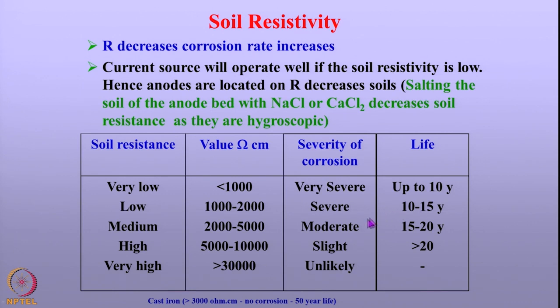There is an indirect relation between soil resistivity and the life of pipelines. If the soil resistivity exceeds 10,000 ohm-centimeter, the life of steel structures can be beyond 20 years. For cast iron, the life can be even beyond 50 years.